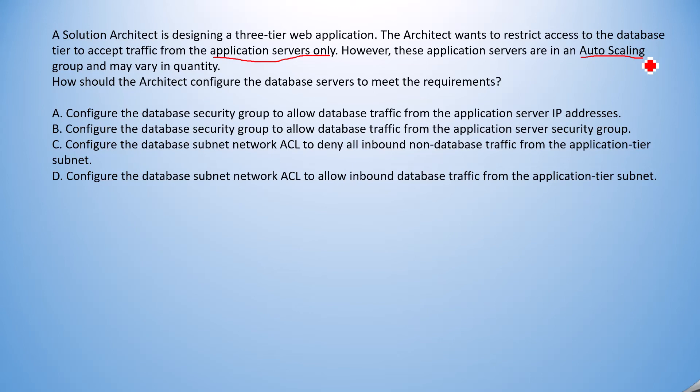We can configure the security group, but the problem is we need to configure it with the application server IP addresses. Since the servers are in an auto scaling group, the private IP addresses will keep continuously changing. It's not possible to dynamically configure the security group again and again with new IP addresses — that's the most cumbersome job and it cannot be done dynamically. So I'll mark this as a wrong answer.